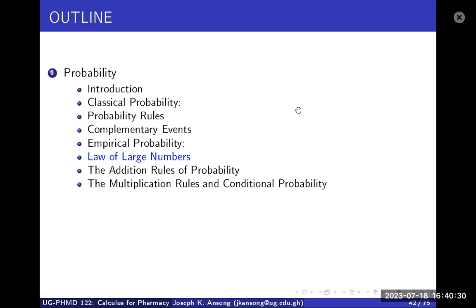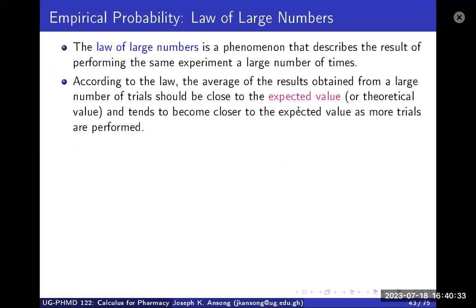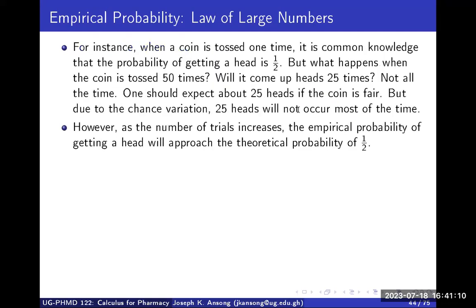The law of large numbers is a phenomenon that describes the result of performing the same experiment a large number of times. According to this law, the average of the results you get by doing several experiments is close to what you expect theoretically. The answer you get tends to be closer and closer to the expected value when you do many trials.